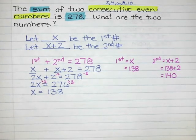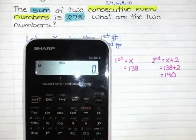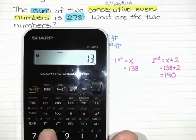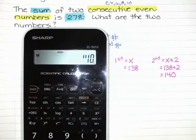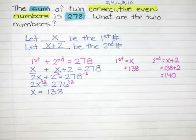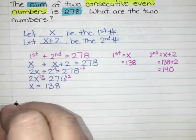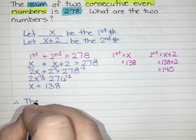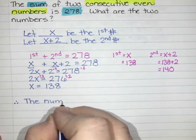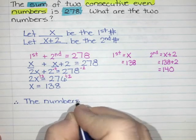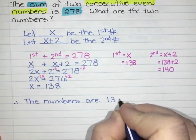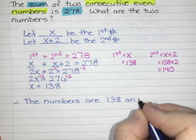Now before I write my sentence, I am just going to check to see that those add to 278. So 138 plus 140 does equal 278. So I am just going to finish this off by saying, therefore the numbers are 138 and 140.